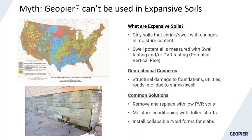Another myth is that GeoPeer can't be used in expansive soils — clays subject to shrink and swell with changes in moisture content. Swell potential is usually measured with swell testing or PVR (potential vertical rise) testing and can be as much as four to six inches in some parts of the country. This can cause significant structural damage to buildings, roads, and utilities. Common solutions include removing and replacing high-PVR soils, moisture conditioning soils to pre-induce swell, or using drilled shafts — though moisture-conditioned clays are generally softer with lower bearing pressure.